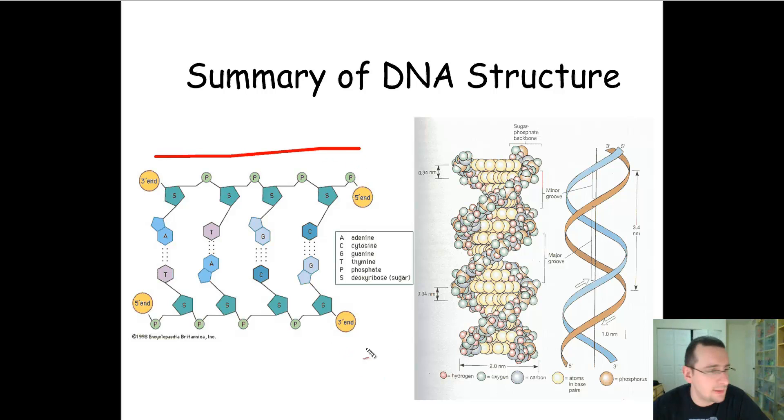So to review the DNA structure, it is a double helix that's anti-parallel, and one side goes from 3' to 5', and the other side goes from 5' to 3', if you're in the same direction.